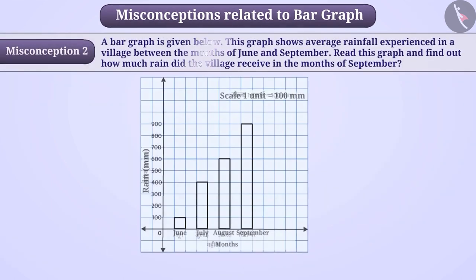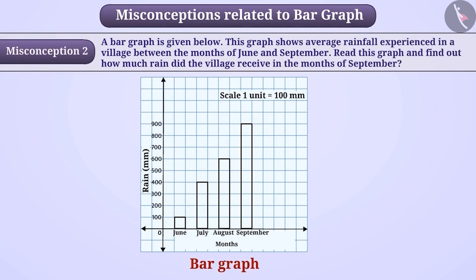Misconception 2. A bar graph is given below. This graph shows average rainfall experienced in a village between the months of June and September. Read this graph and find out how much rain did the village receive in the month of September.